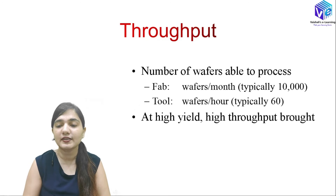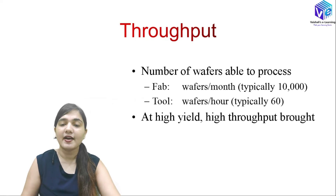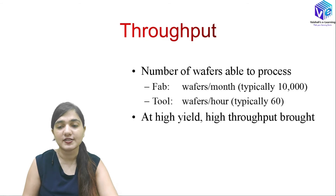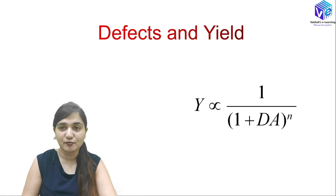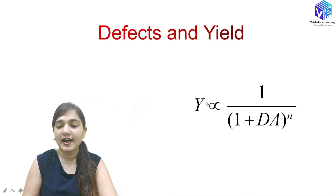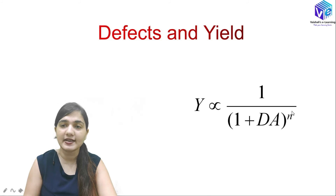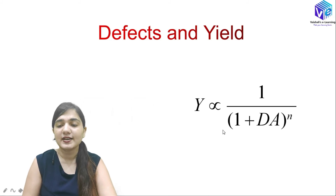Throughput is based upon yield — if yield is high, throughput will be high. Throughput can be expressed as wafers per month or wafers per hour. Yield is inversely proportional to defects: if there are more defects, yield will be less. The yield formula is Y proportional to 1/(1 + D·A)^n, where A is area and n is the number of chips.